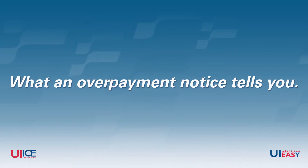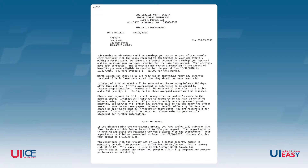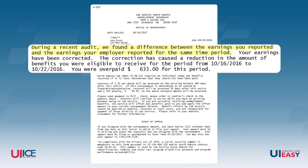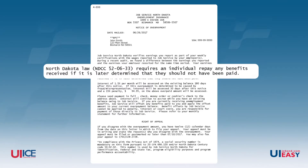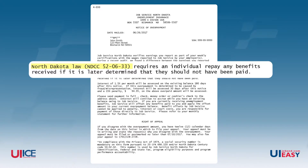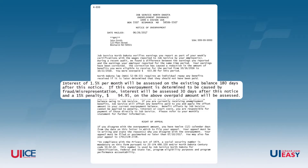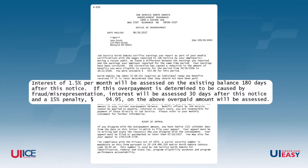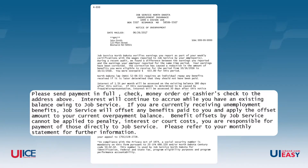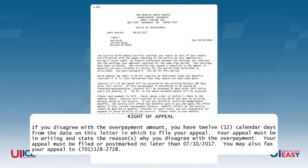What does an overpayment notice tell you? The overpayment notice tells you what caused the overpayment, the period of time the overpayment covers, the amount of the overpayment, and includes the section of law that defines what an overpayment is. The overpayment notice also tells you if and when any interest and/or penalties will be applied. The remainder of the notice explains how to repay the overpayment and how to file an appeal if you believe the amount of the overpayment is incorrect.